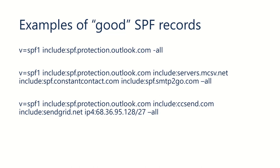Here are some examples of what we would consider good SPF records. For example, v=spf1 include:spf.protection.outlook.com -all. That's the simplest SPF record that you could have if you're on Office 365. A lot of people, when they're on Office 365, have that set up just as part of moving to an Office 365 tenant.